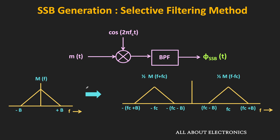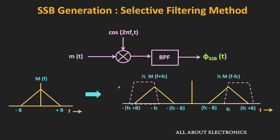Using the bandpass filter, we can select the lower sideband and suppress the upper sideband, or vice versa — giving us either the upper or lower sideband SSB signal. However, the ideal bandpass filter has a sharp cutoff, whereas actual filters have a very gradual rolloff. So if we try to suppress either sideband using an actual bandpass filter, we cannot fully suppress the unwanted band.